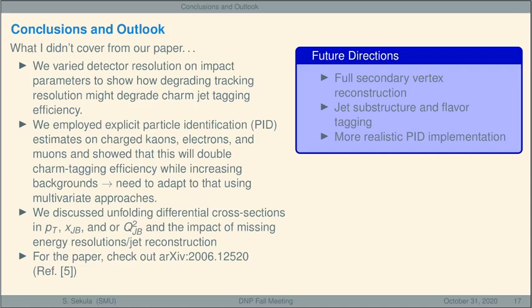All right, so let me offer some conclusions and outlook. So we did a lot of things in the paper I didn't talk about here, like varying detector resolution to see what it does to flavor tagging and employing particle ID algorithms or some future expected particle ID approach in order to also isolate single particles within jets as a sign of heavy flavor. I didn't cover that here, but you can take a look at the paper or you can ask me questions about it afterward. There's lots of directions we can go in with full secondary vertex reconstruction, jet substructure and flavor tagging, and more realistic particle ID implementations. And of course, I urge you to take a look at this. We're very excited about the potential in the future as we continue to develop these studies for understanding more about intrinsic strangeness in the proton. Thank you very much.